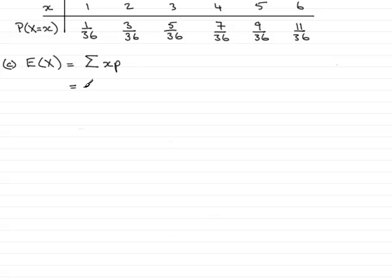So in other words for this question it will be 1, the observed value here, 1 multiplied by its associated probability so it will be 1 times 1/36. Then we have to add it to the second observed value, 2 multiplied by its associated probability which is 3/36 and we carry on doing this on each of the observed values so that will be 3 times 5/36 plus 4 times 7/36 plus 5 times 9/36.